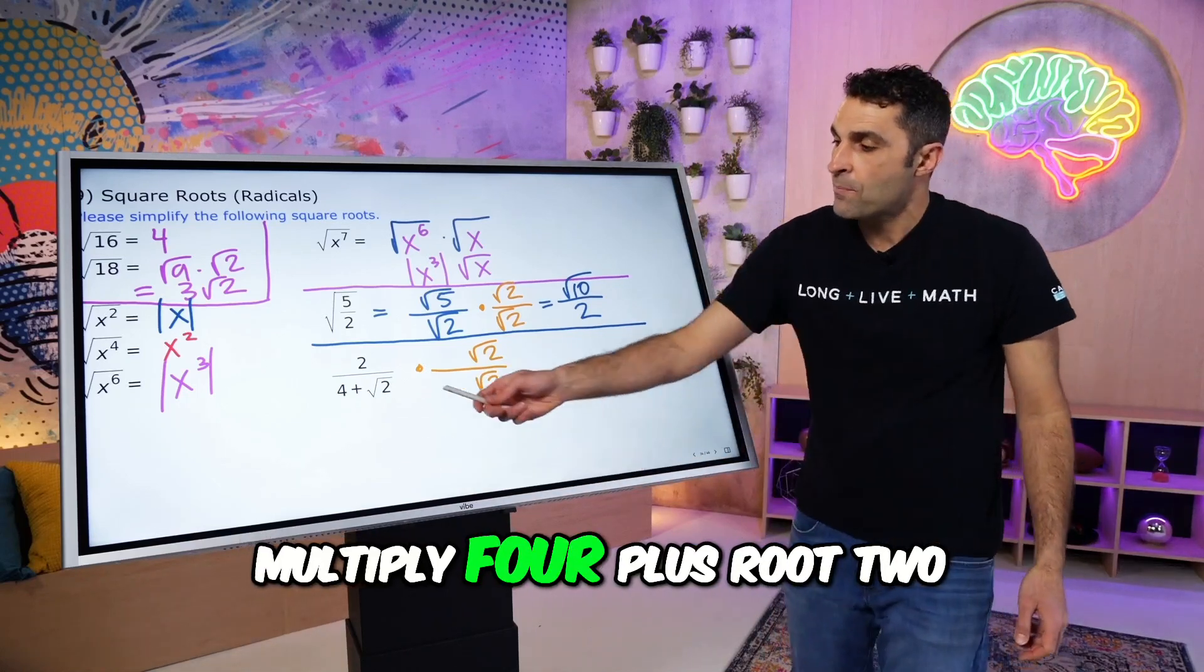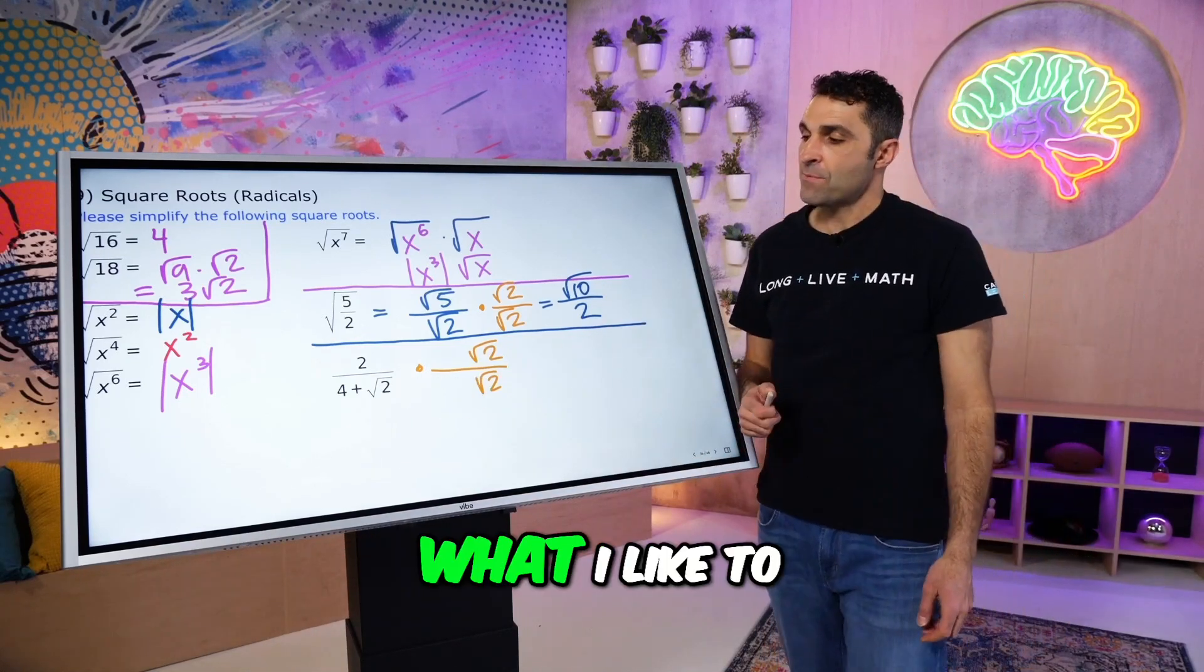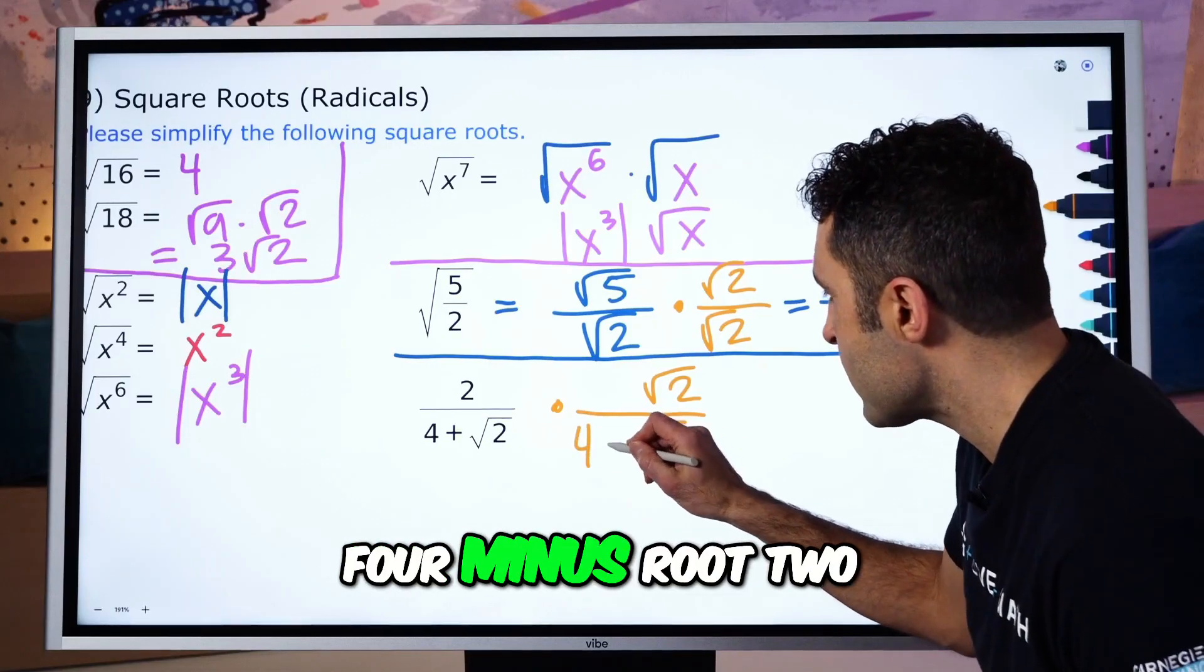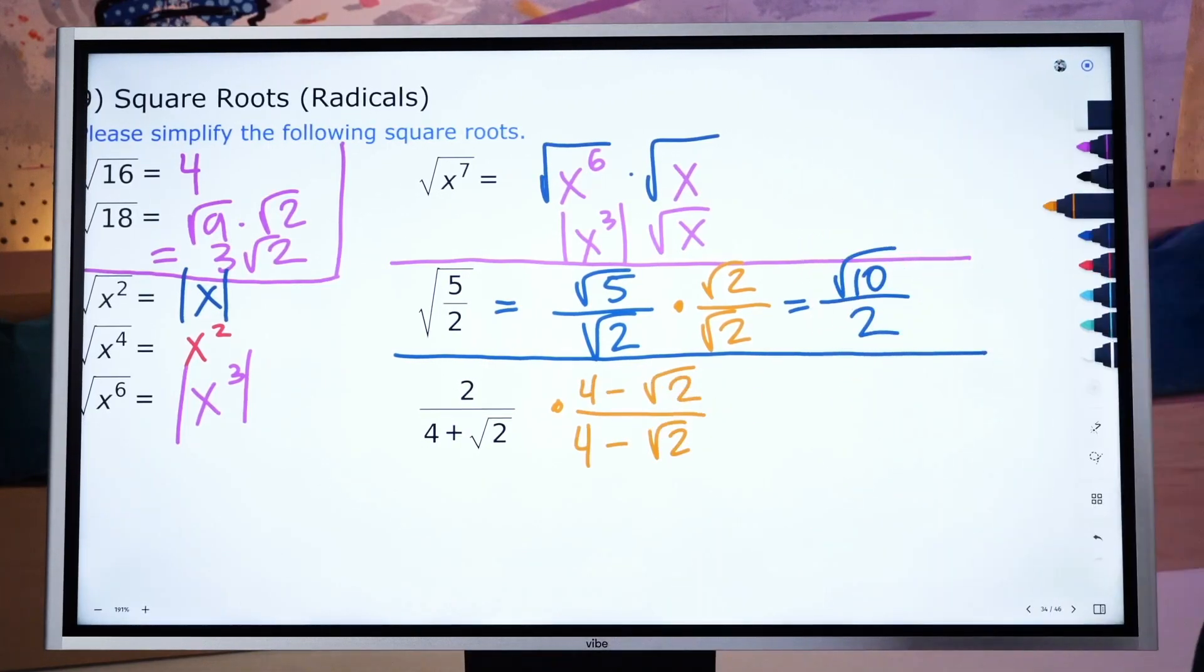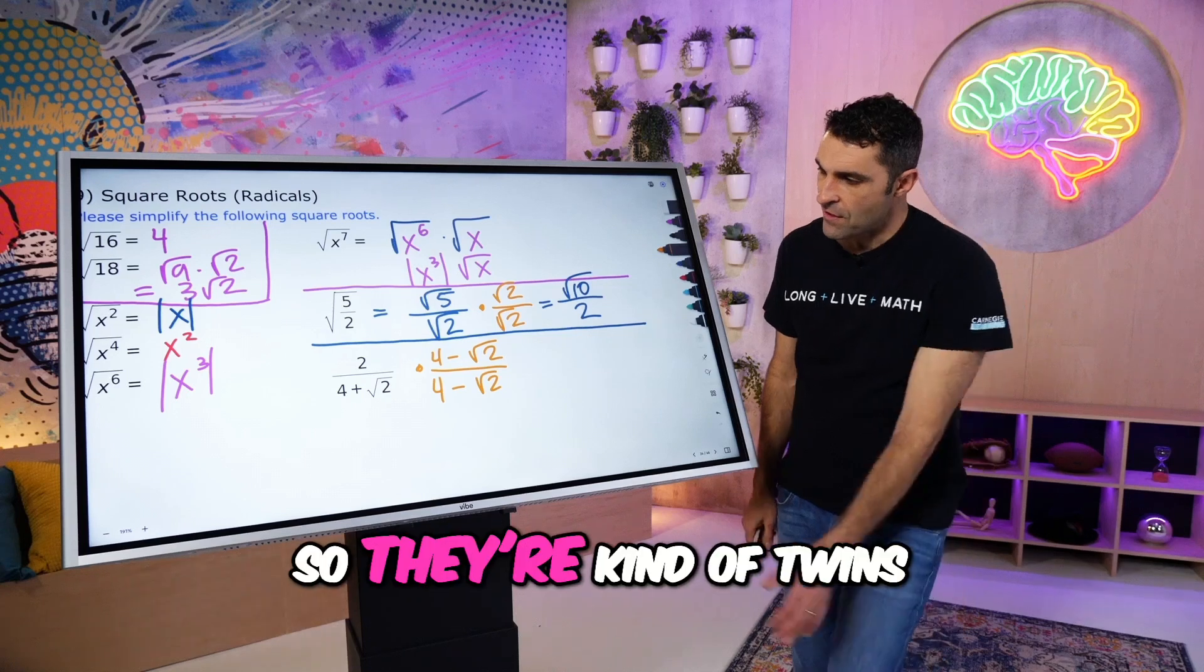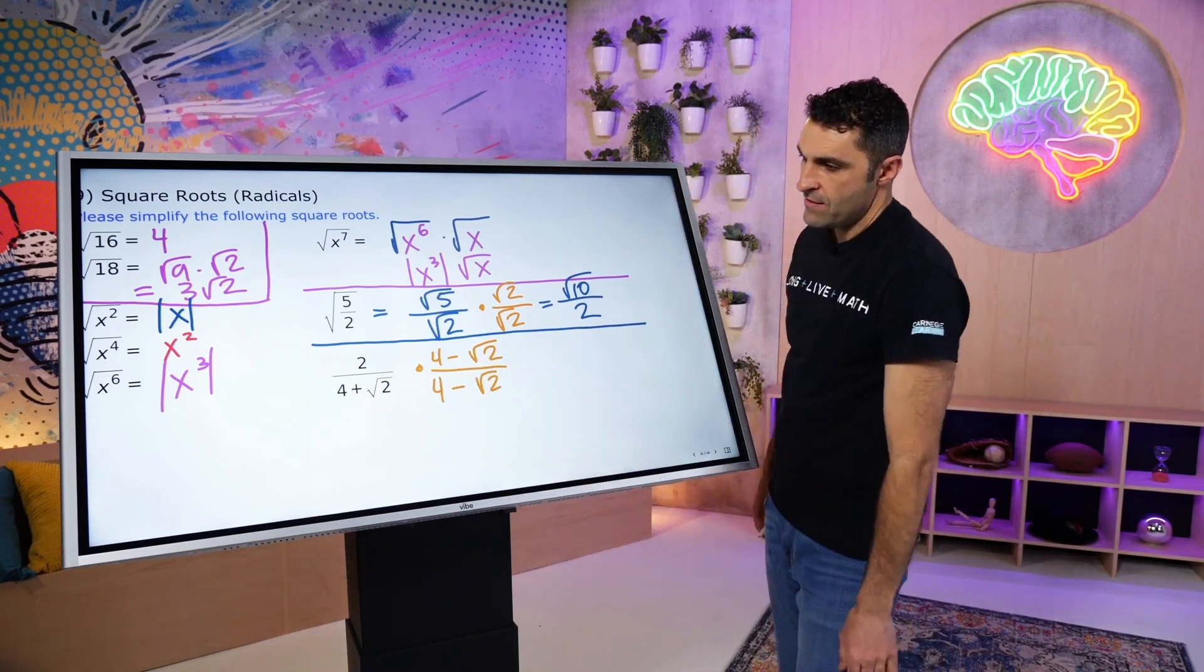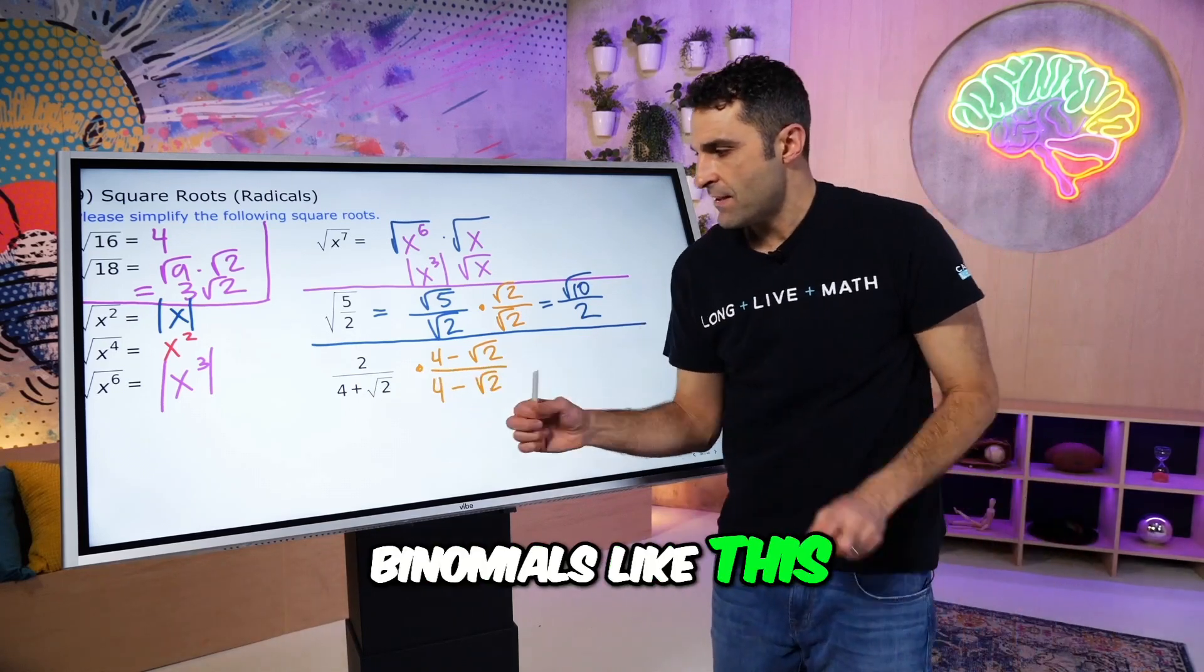So the thing to multiply 4 plus root 2 by is what I like to call the evil twin, 4 minus root 2. So they're kind of twins, but one positive, one negative, and these are technically called conjugates when you have binomials like this, two terms.